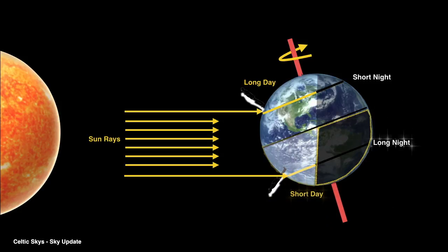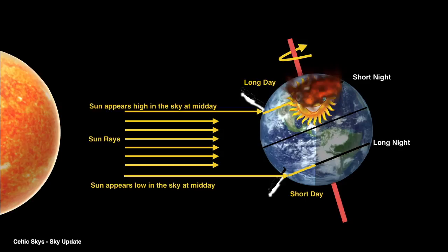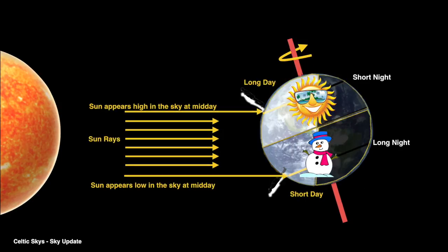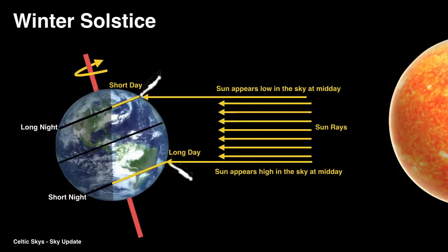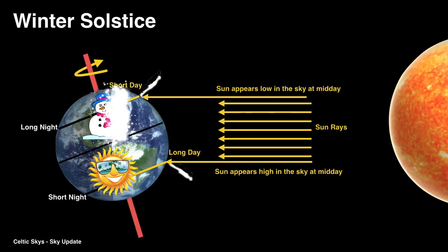This has the effect of warming the climate more in the Northern Hemisphere and cooling it more in the Southern Hemisphere. Thus, we have summer in the North and winter in the South. Conversely, when the axis appears to be pointing away from the Sun, we have summer conditions in the Southern Hemisphere and winter conditions in the Northern Hemisphere.